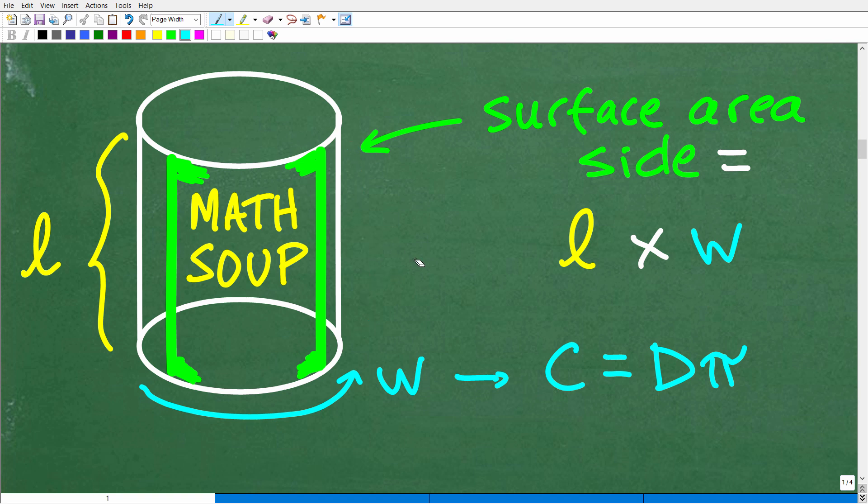Now it all depends on what you want to call the length and the width, but effectively we would have some sort of long, I'm just going to draw it right here, some sort of long piece of paper. And we would take this thing and we just wrap it around the can. So effectively this thing is nothing more than a rectangle.